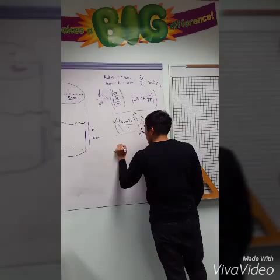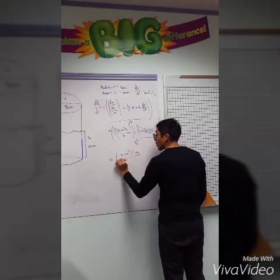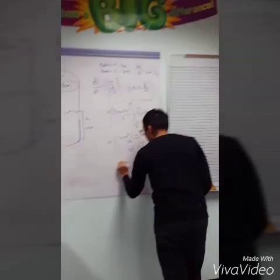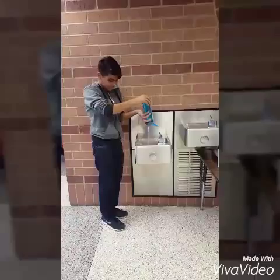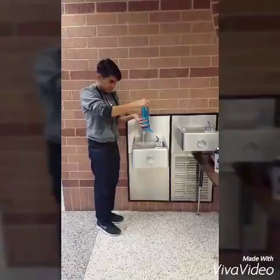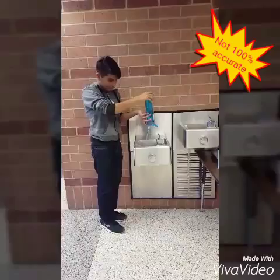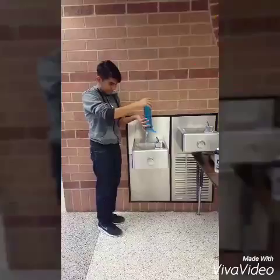which leaves us with dh/dt equals 3 centimeters cubed per second all over 25 centimeters squared times π, which equals 3 over 25π centimeters per second. This equals dh/dt, which represents the changing height of the water over time.